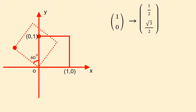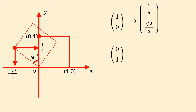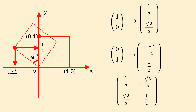The point (0, 1) has been transformed through the rotation of 60 degrees anticlockwise about the origin onto the point with coordinates minus root 3 over 2 and a half. So the point (0, 1) is being transformed to (−√3/2, ½).